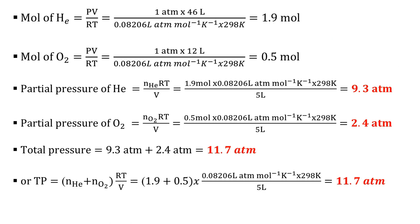We determine the moles of helium first. The number of moles equals PV/RT. The pressure is 1 atmosphere, the volume of helium is 46 liters, divided by the gas constant times 298 Kelvin — that gives 1.9 moles of helium. For oxygen: 1 atmosphere times 12 liters divided by R times 298 K gives 0.5 moles of oxygen.